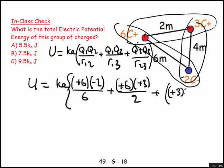The third pair, which is plus three times minus two over a distance of four.